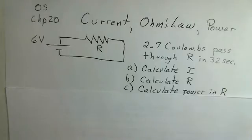In this example, we have a 6 volt battery connected to some resistor. The wires here would be ideal wires, no resistance in those wires. And we're told that 2.7 coulombs passes through the resistance in 32 seconds.